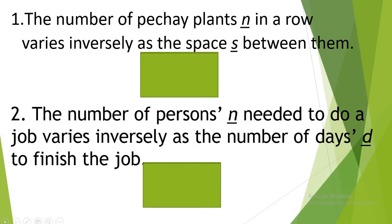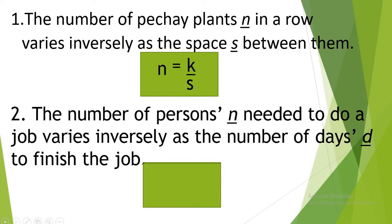Let us write the mathematical equation for the following. Number 1: the number of petchai plants N in a row varies inversely as the space S between them. We have two variables: N (number of petchai plants) and S (space between them). From the equation Y is equal to K over X, we replace Y with N and X with S. So our equation is N is equal to K over S.